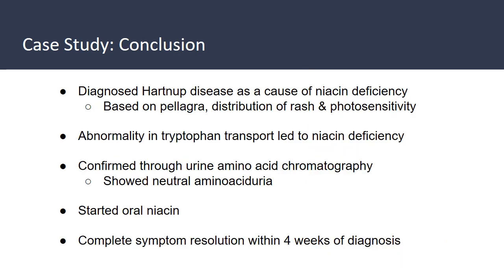Our patient was diagnosed with Hartnup disease caused by a niacin deficiency. This diagnosis was based on the initial presentation of pellagra — the rash distribution over her body — and the photosensitivity. Ultimately, an abnormality found in the analysis of tryptophan transport led to this deficiency, confirmed through urine amino acid chromatography showing neutral aminoaciduria, with tryptophan as the main amino acid. The patient was started on oral niacin and had complete symptom resolution within four weeks of diagnosis.